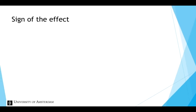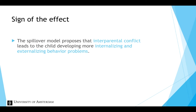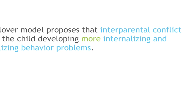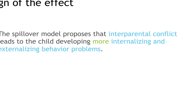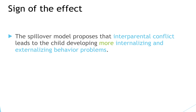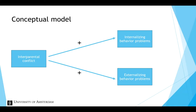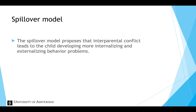We could also add signs to the effects in the conceptual model. A sign can either be positive or negative. In this example, inter-parental conflict leads to more internalizing and externalizing behavior problems. In other words, high levels of inter-parental conflict lead to high levels of internalizing and externalizing behavior problems, indicating positive relationships.